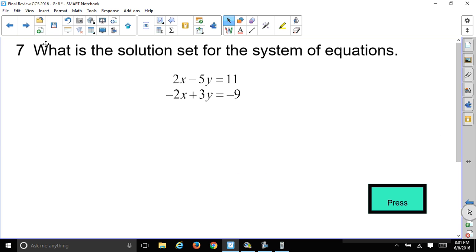Here's what we'll pick up next time. What is the solution set for the system of equations? 2x minus 5y equals 11. Negative 2x plus 3y equals negative 9.